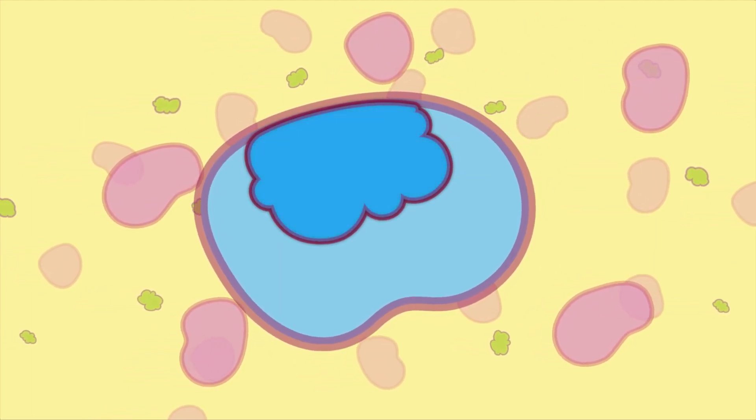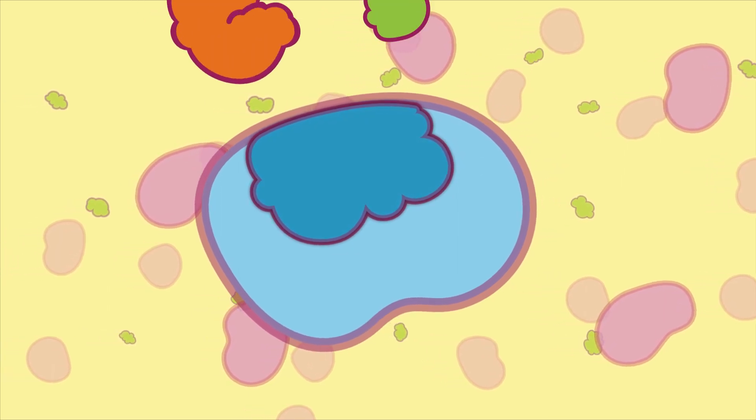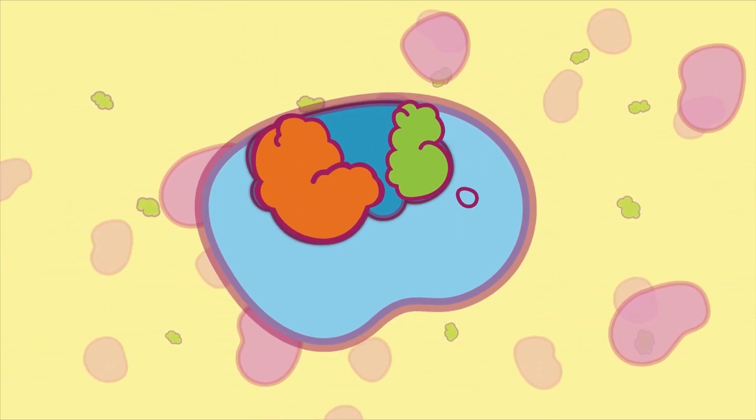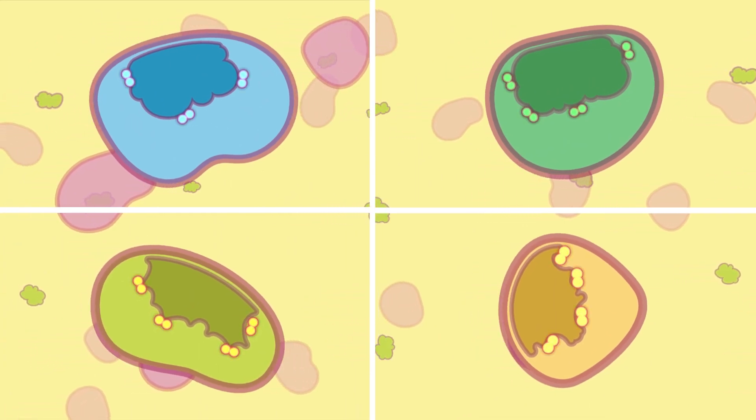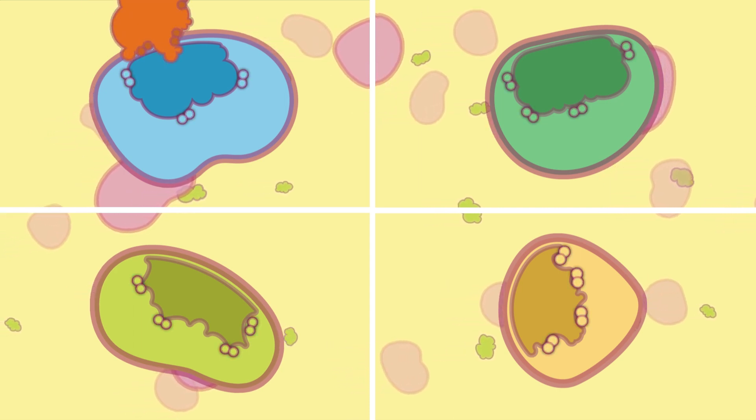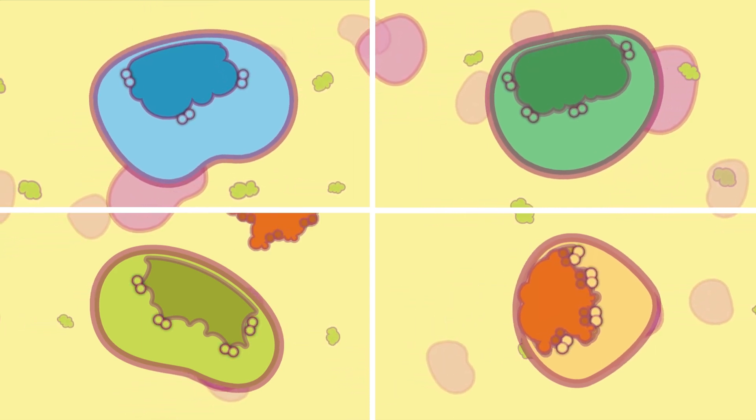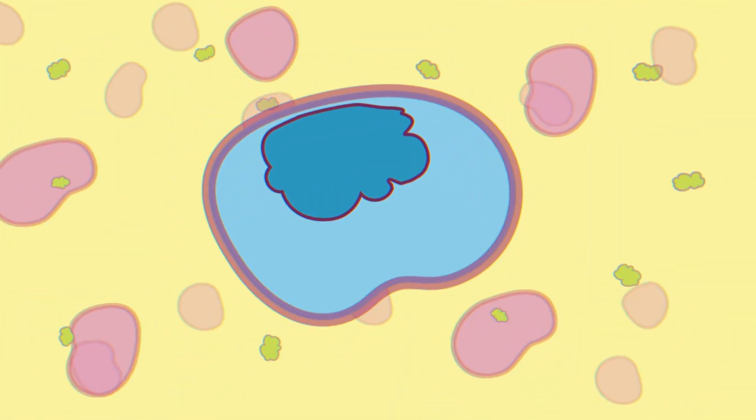Enzymes have a specific place in them called the active site, where the substrate binds and real-time action takes place. The active site has a specific size, shape, and chemical behavior rendered to it by specific arrangement of amino acids. Thanks to these amino acids, an enzyme's active site is unique only to a particular substrate.